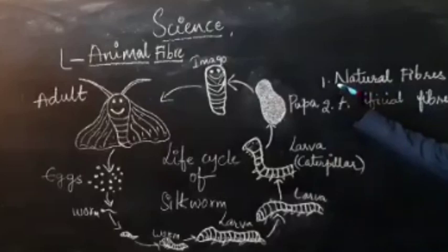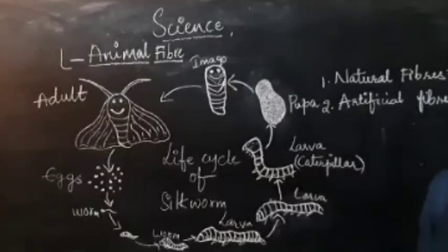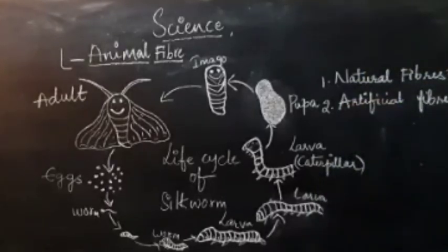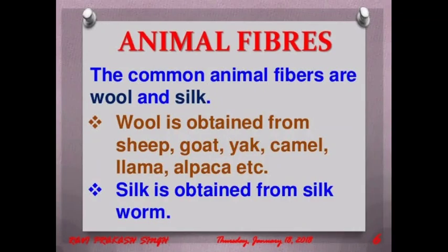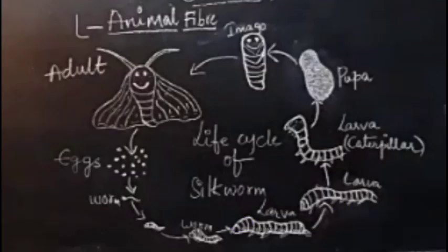Today we are going to learn about natural fibers. Natural fibers can be obtained from plants or from animals. Regarding fibers obtained from plants, you have learnt about cotton and jute in sixth class. In this chapter you are going to learn about two animal fibers. The first animal fiber is silk.